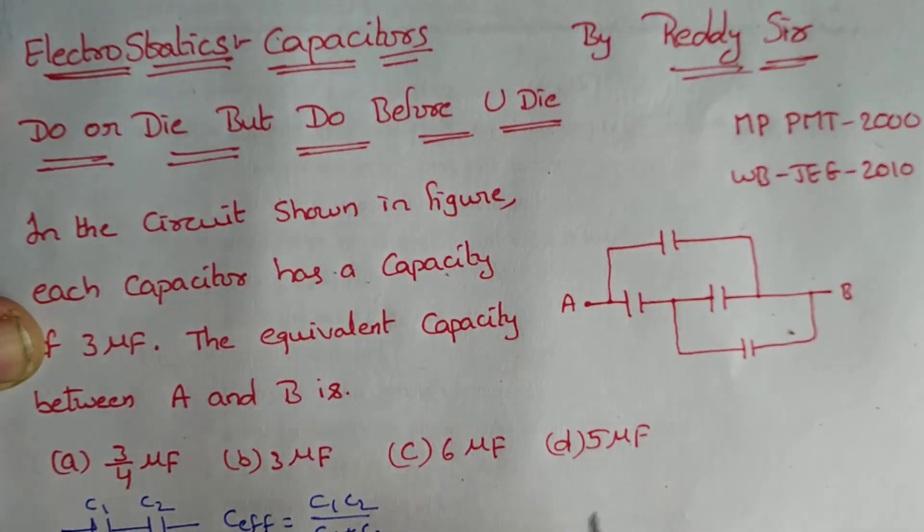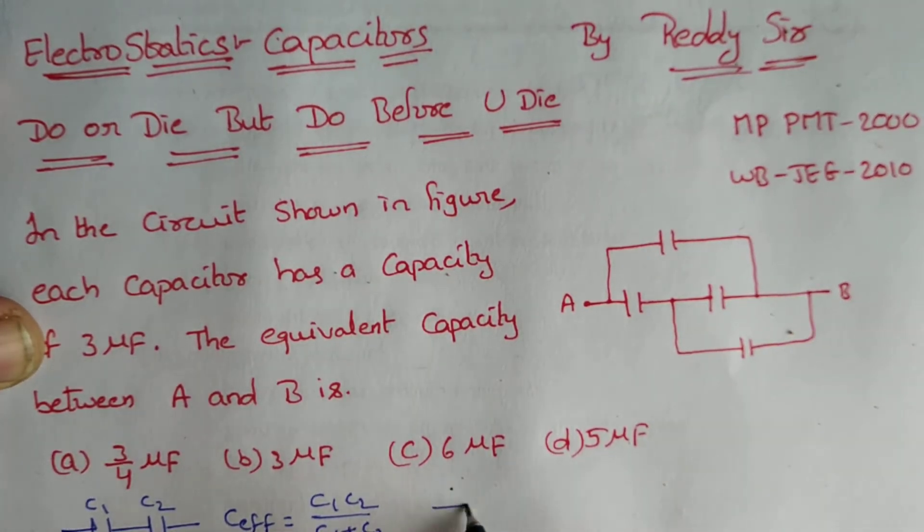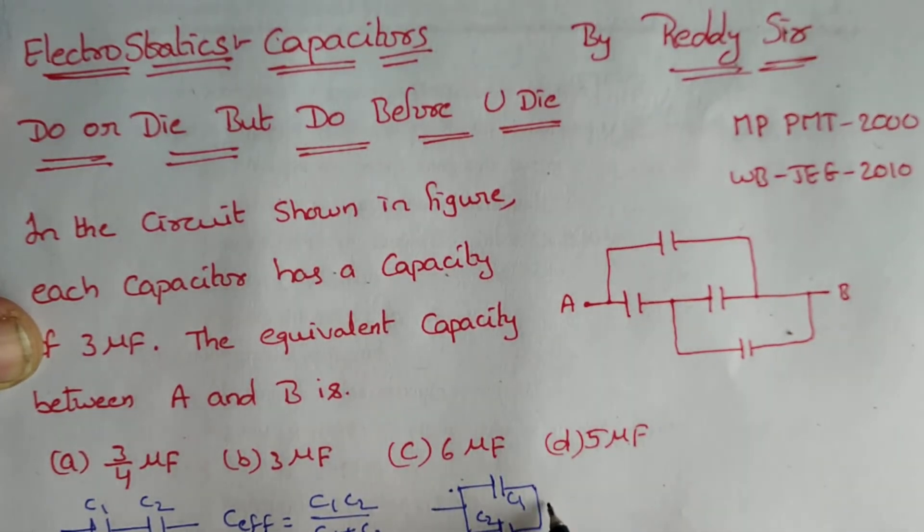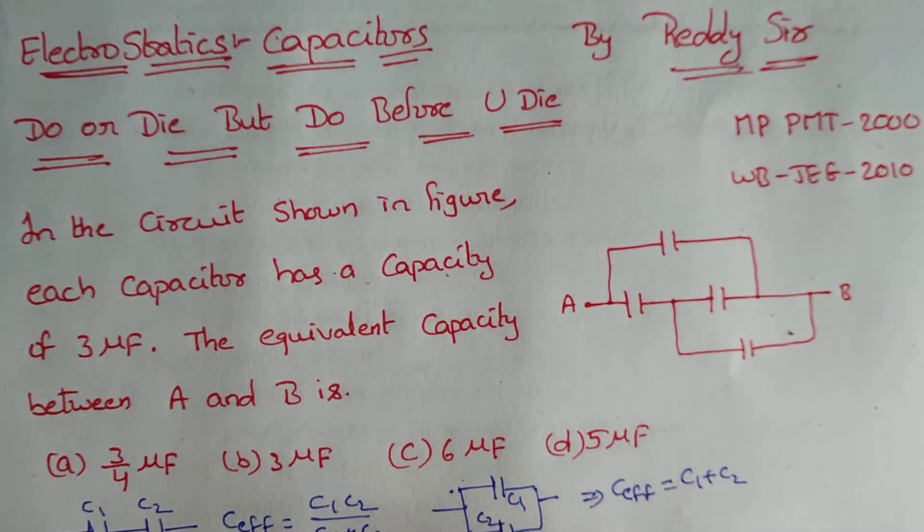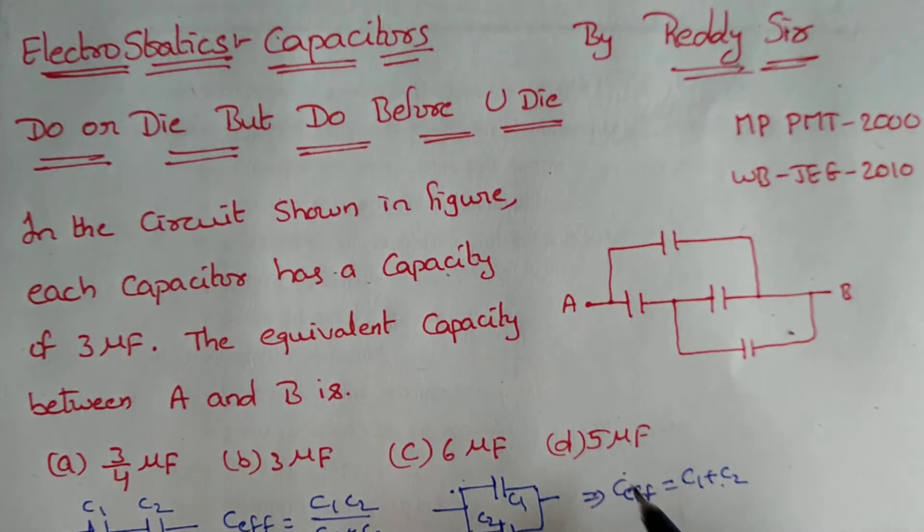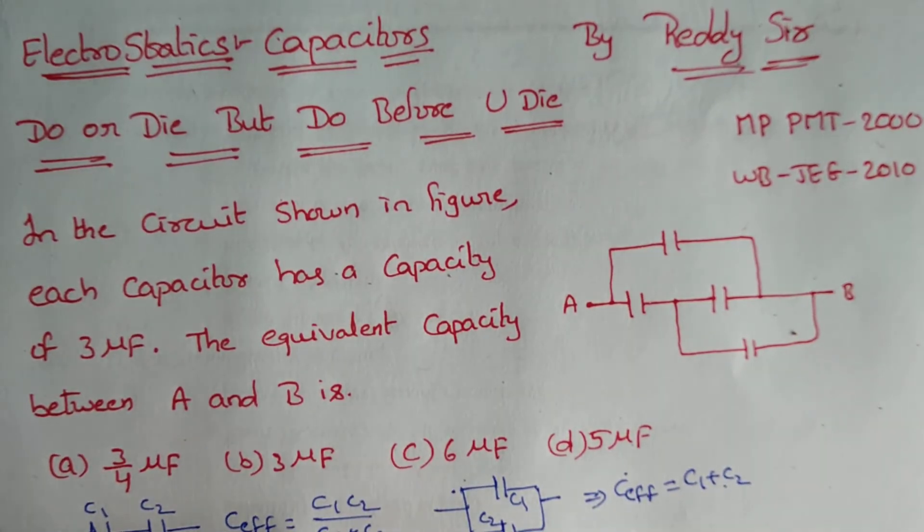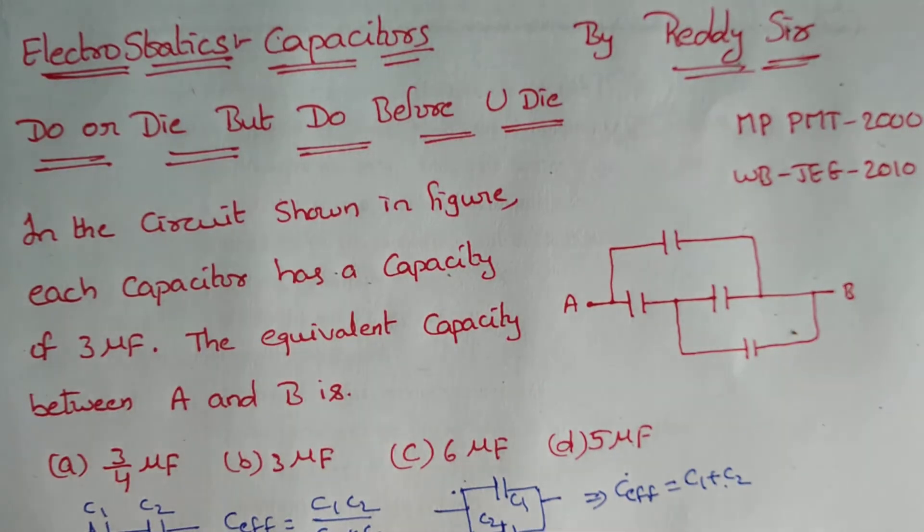Similarly, if the two capacitors are in parallel C1 and C2, then effective capacitance we can give as C effect can be written as C1 plus C2. That means if the two capacitors are in parallel just we are going to be adding. If the two capacitors are in series we can give as C1 C2 by C1 plus C2.